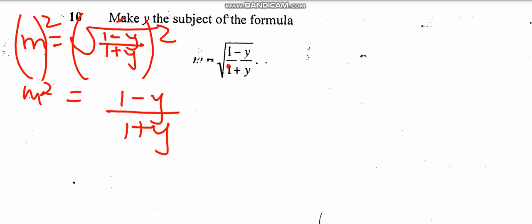First of all, if you have a square root, remove square root by squaring both sides. So I'm going to be left with m squared equivalent to 1 minus y over 1 plus y.